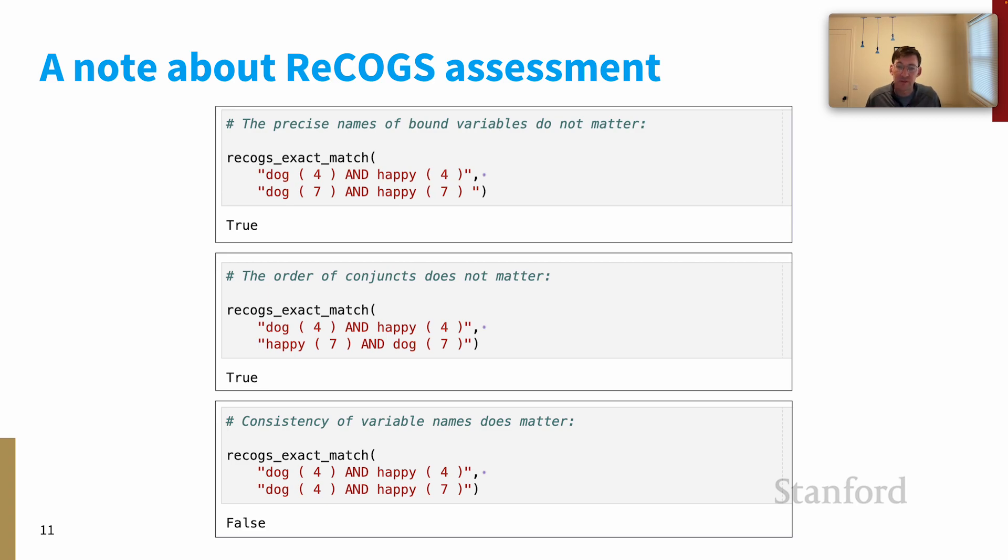However, consistency of variable names does matter. So this pair evaluates to false because the first one uses 'dog' and 'happy'. It has both a variable four for both of those predications, whereas the second one has 'dog of four' and 'happy of seven'. And that is semantically distinct. Now we're talking presumably about two distinct elements, whereas the first logical form is about one. And so we arrive at a conclusion that these are semantically not equivalent. So that's three kind of cases that give you a feel for what we're trying to do with this evaluation, which is really get at semantic equivalents, even where logical forms vary.